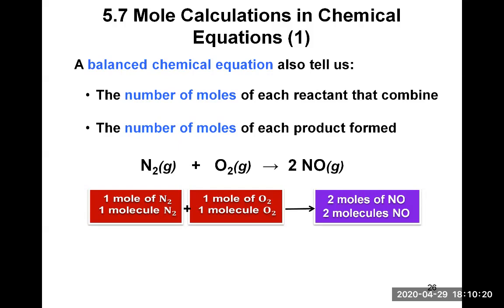Looking at this example: N2, nitrogen gas, plus O2, oxygen gas, makes two NO molecules, also gas. From this equation we can extract the information that, talking about molecules, if you combine one molecule of N2 with one molecule of O2, you can make two molecules of NO. It's really like a recipe that tells you the proportions in which the reactants react and the proportion of product that you can make.